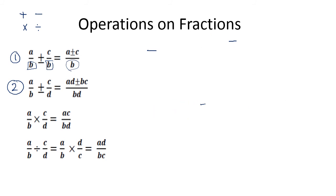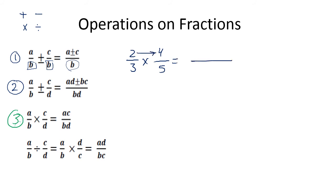Now, how we can multiply two fractions — this is a very easy method. If you have two over three multiplied by four over five, all you need to do is multiply the numerators together and multiply the denominators together. That's it.